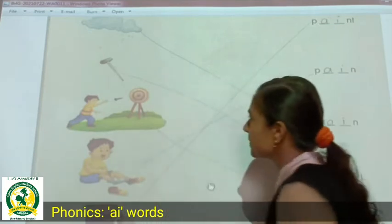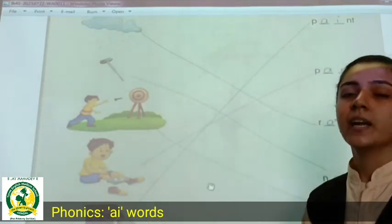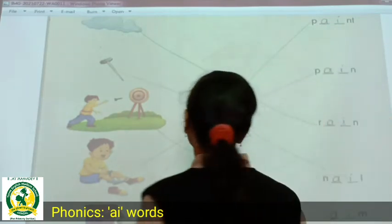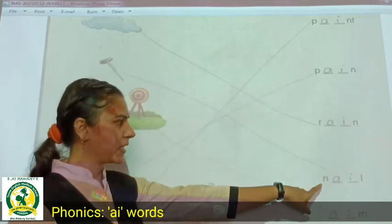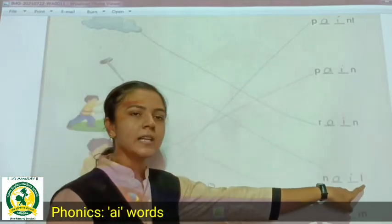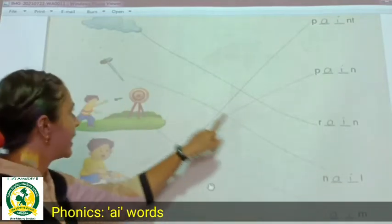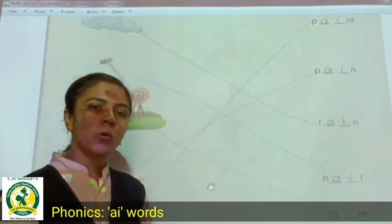Now see the next picture. N, A, I, L. I am going to write A, I in the blanks. We will match this nail with this spelling. Okay?